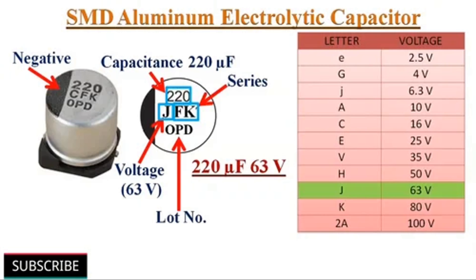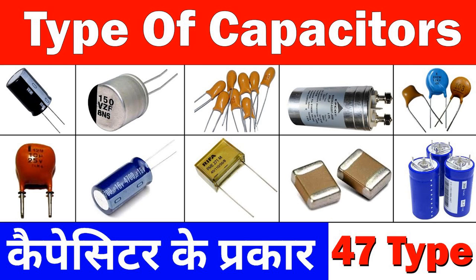In summary, coupling capacitors facilitate the transmission of AC signals while blocking DC, ensuring proper signal transfer between circuit stages. Decoupling capacitors stabilize the power supply voltage for components, preventing voltage fluctuations and maintaining circuit stability. Both functions are crucial for the proper operation of electronic circuits, especially in applications where signal integrity and stability are paramount.